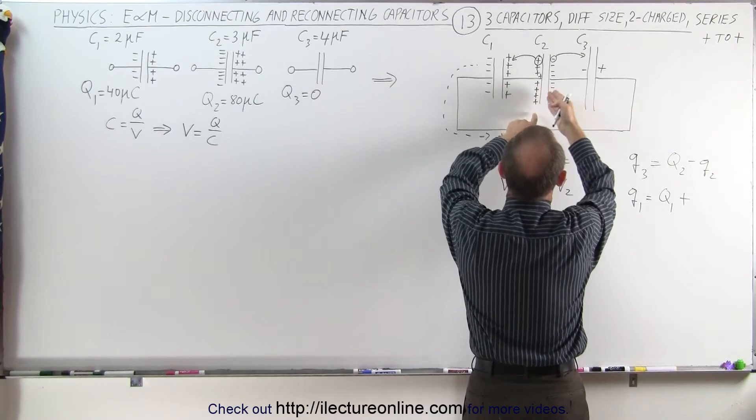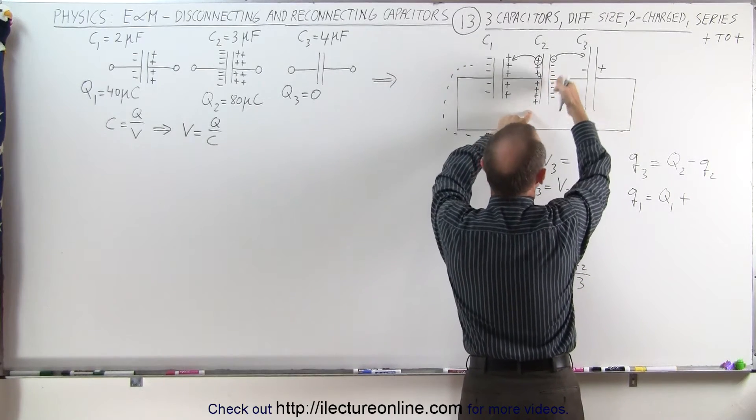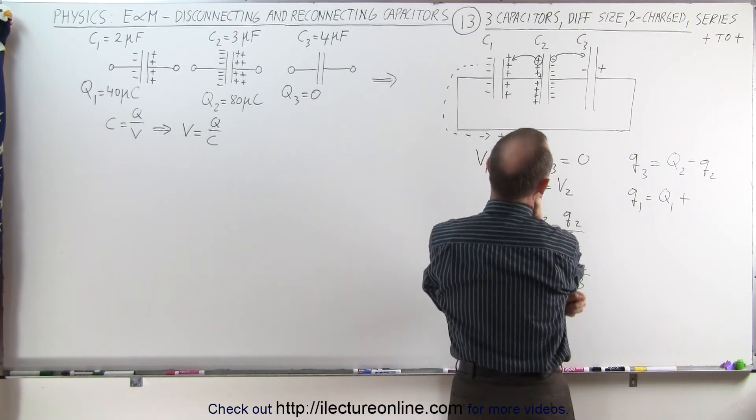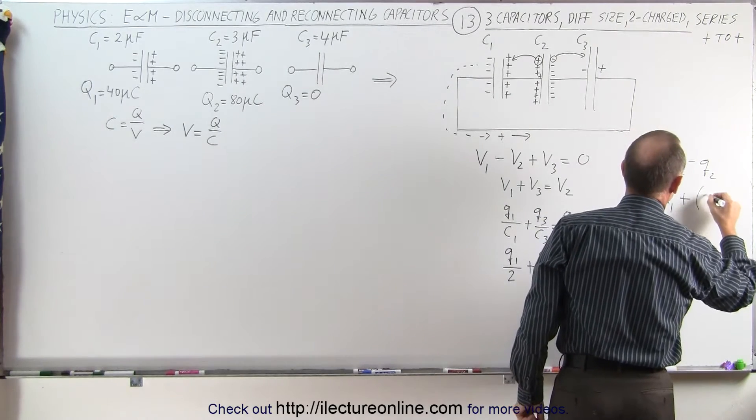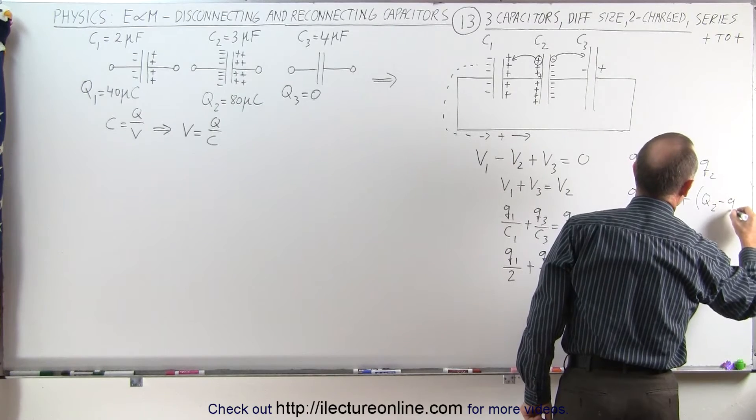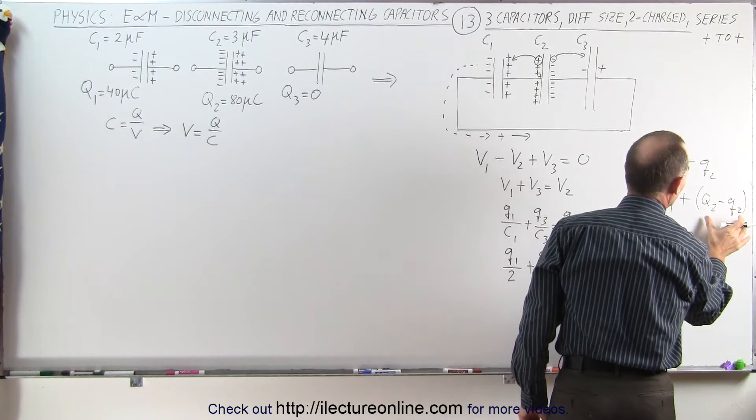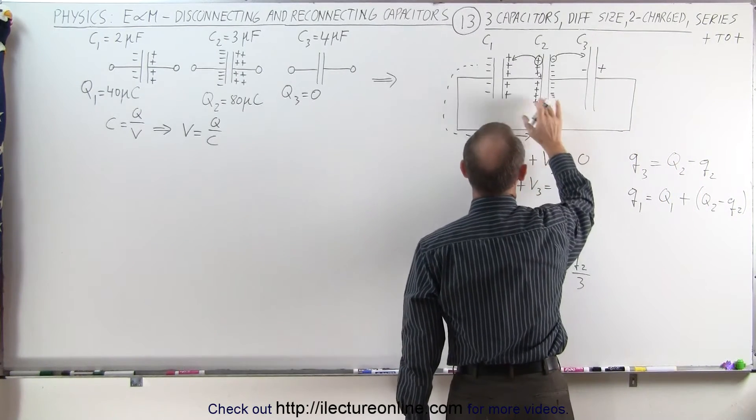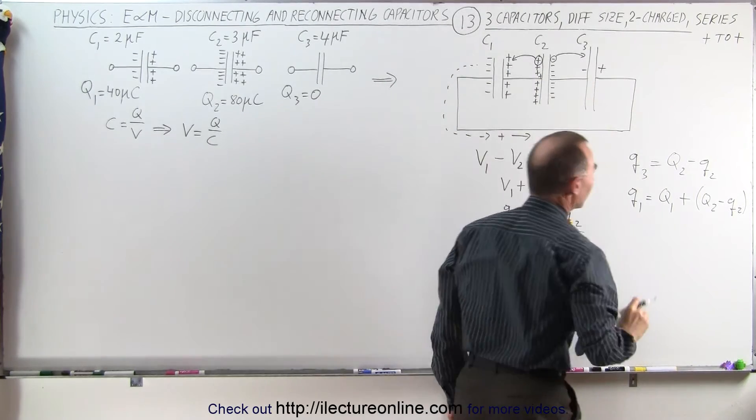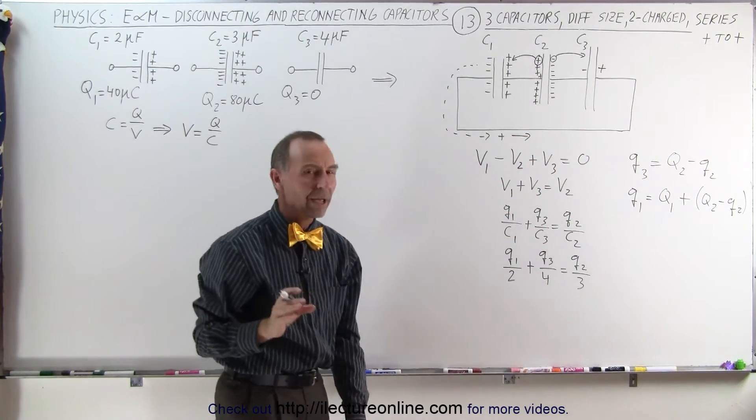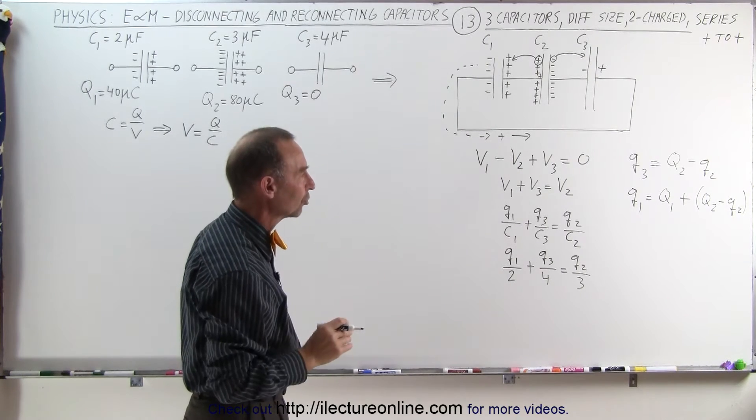So you can see that the charge goes in both directions. The positive charge goes here, and the negative charge goes over here, which means that this difference will be plus big Q2 minus small Q2. So that's the amount of charge that comes off of this capacitor, which will go in this direction, the positive charge in this direction, and the negative charge in that direction. So now we have some good comparisons between the different charges.